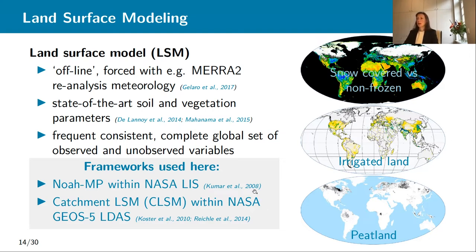Typically these models represent nominal land surface, either with snow cover or without snow cover. Very often we miss some processes such as, for example, irrigation, even though there's quite some irrigated land on Earth. Another example that's often missing is peatlands or other specific ecosystems that are not well represented in state-of-the-art land surface models.